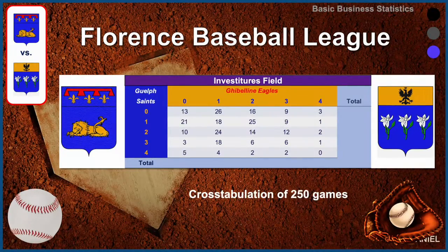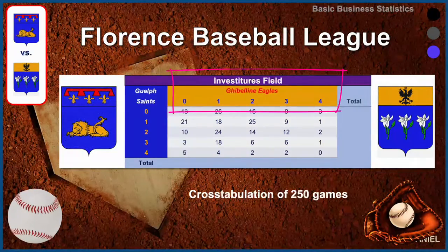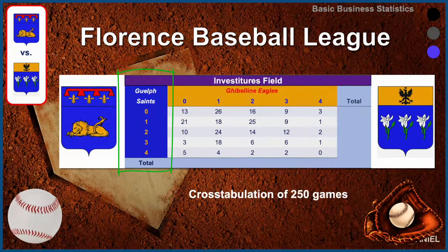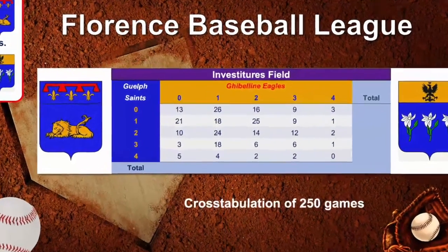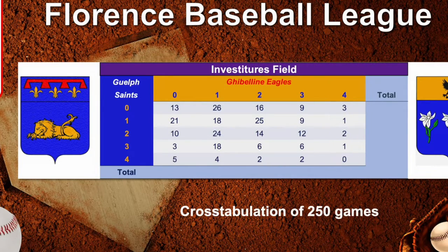We are going to cross tabulate the results for the 250 games into a table. We see the Ghibelline Eagles number of runs scored across the top in yellow, and the Guelph Saints runs scored in blue. This allows us to answer questions like: in how many games did the Eagles score zero and the Saints also score zero? The answer: 13 of 250 games. In how many games did the Eagles score three but the Saints score two? Twelve games out of 250.